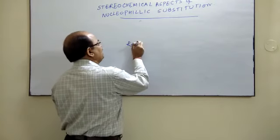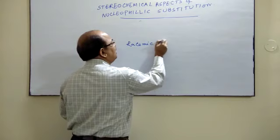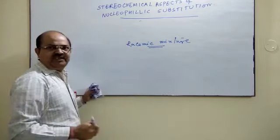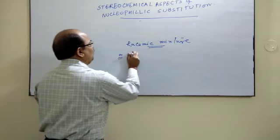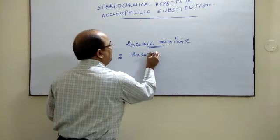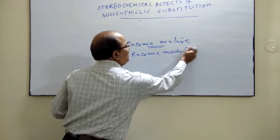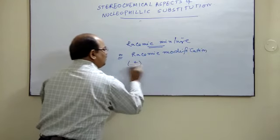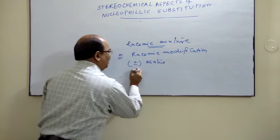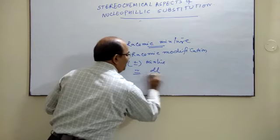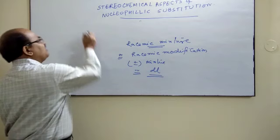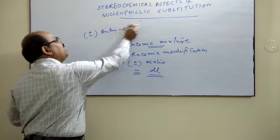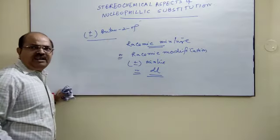then that mixture is known as your racemic mixture. It is also known as your racemic modification. Racemic mixture or racemic modification. It is also known as your plus-minus mixture or simply called your DL mixture. For example, if we write plus-minus Butan-2-ol,